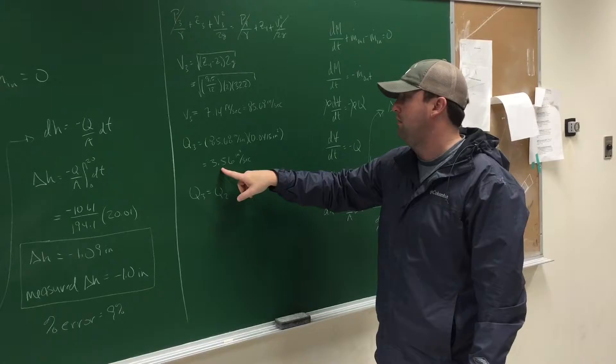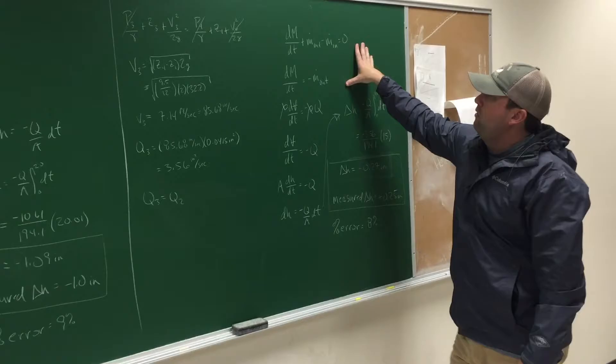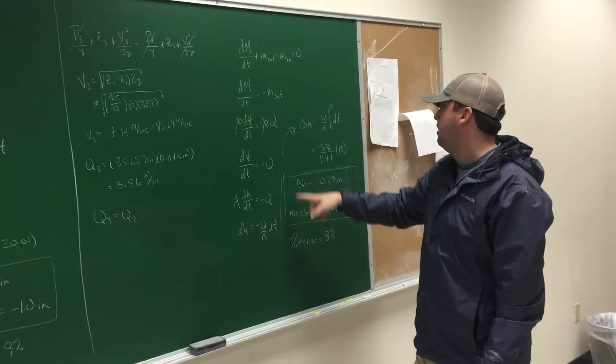So, we used the same Bernoulli's equation. And we got our new velocity coming out of the tube to be 85.68 inches per second. With that, we got our Q with the new area and the new velocity to be about 3.56 cubic inches per second.